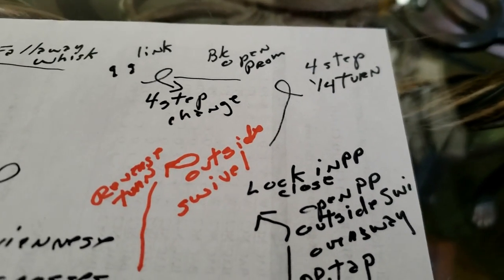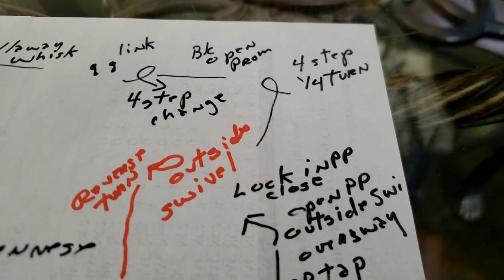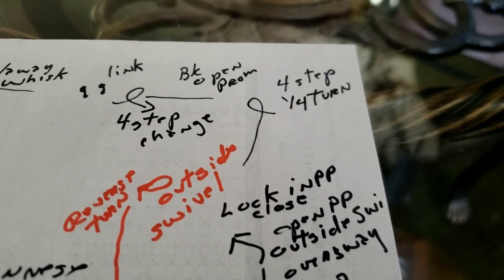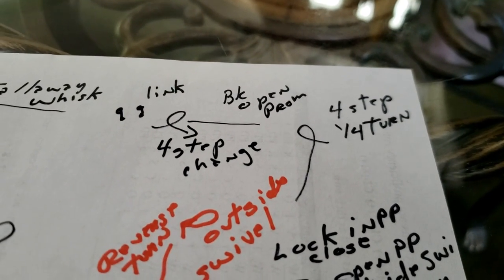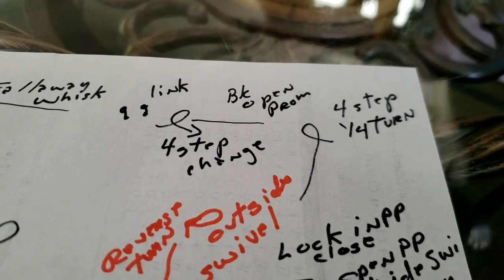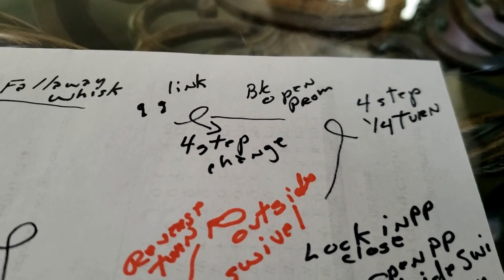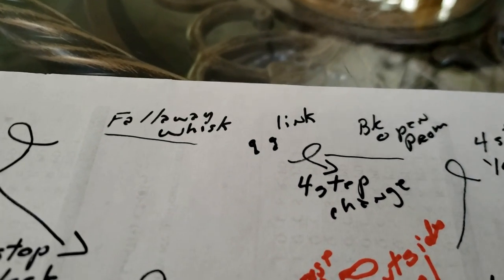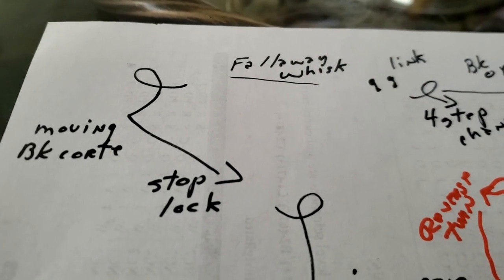This is the part we need to go over because I wasn't sure where you put the quarter beats in. The quarter beats would normally be done when you're in promenade. So we'll talk about that. But then you did use the four step in the corner. That ends in promenade. We did a back open promenade to a four step change. The four step change ends in closed position. So you need the progressive link. And I just made two little feet there. And then we use the fallaway whisk into the corner.